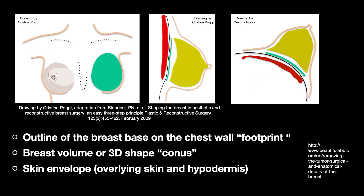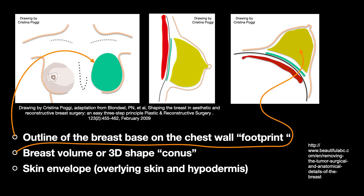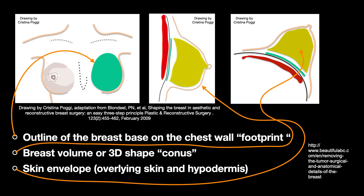Compressibility depends on many aspects. In my method of teaching, I consider these three basic parameters: the outline of the breast base on the chest wall — the footprint — the breast volume, and the skin envelope. They were proposed in the plastic surgery field by an internationally known surgeon, Philip Blondeel. From those parameters, I could deduce the breast compressibility, and hence I could categorize patients in three groups.